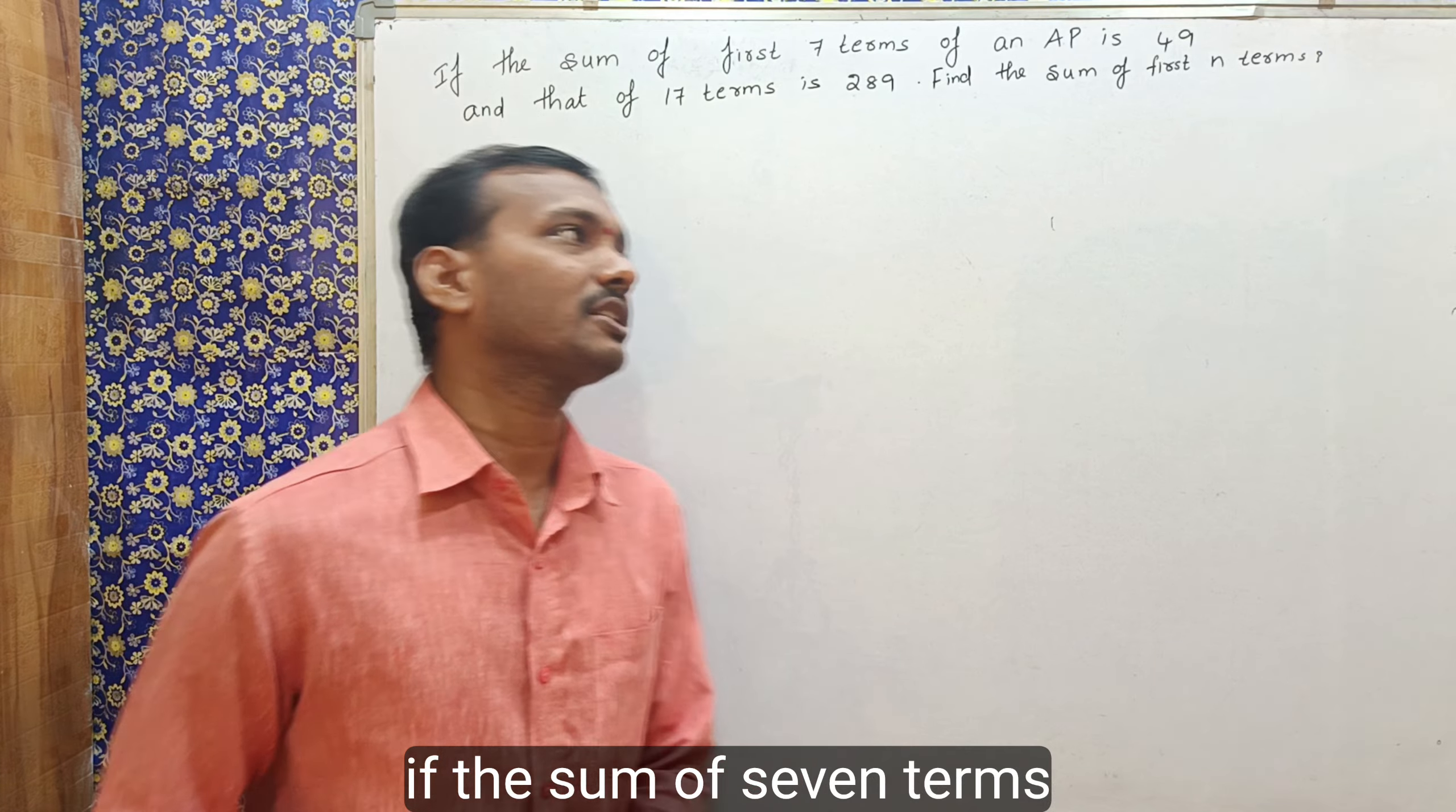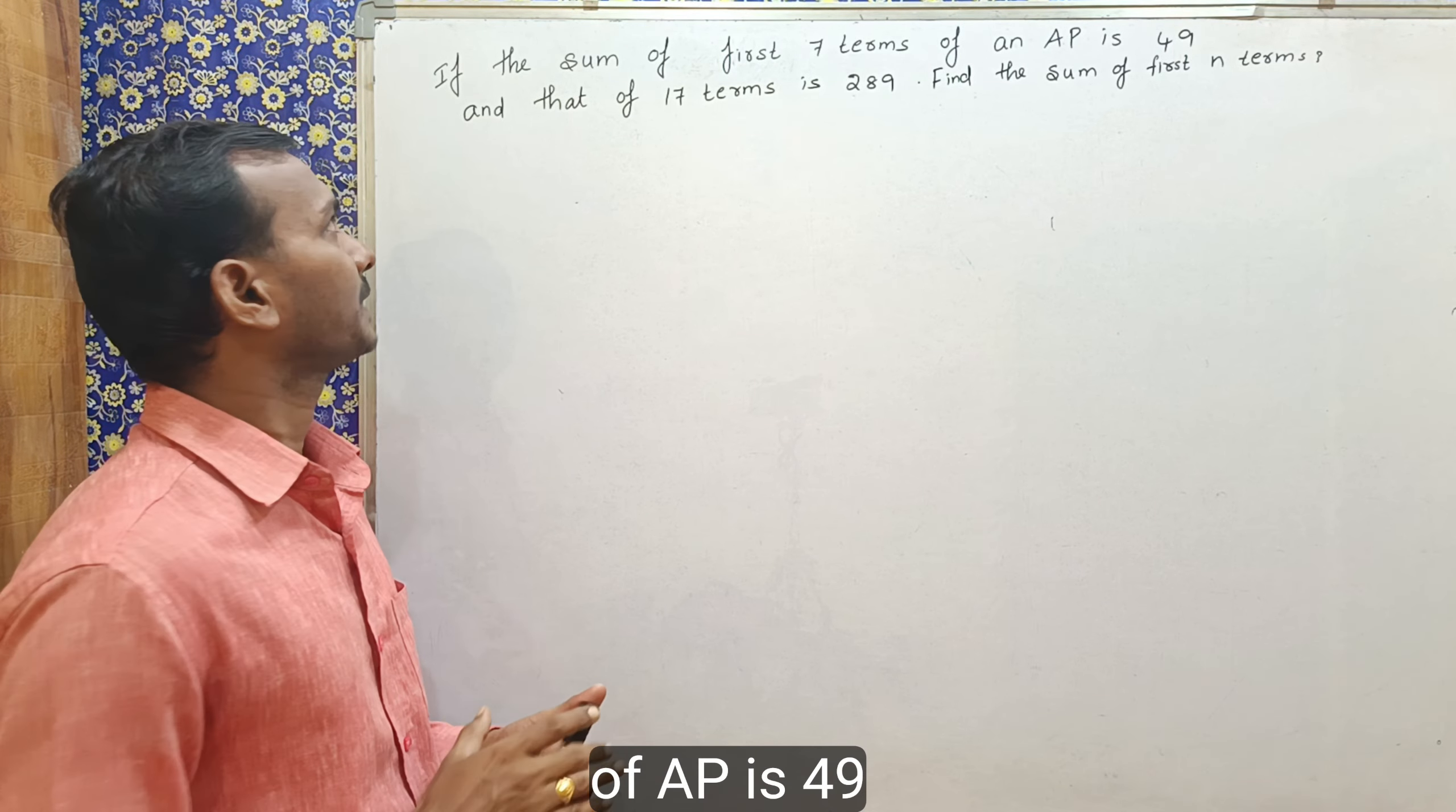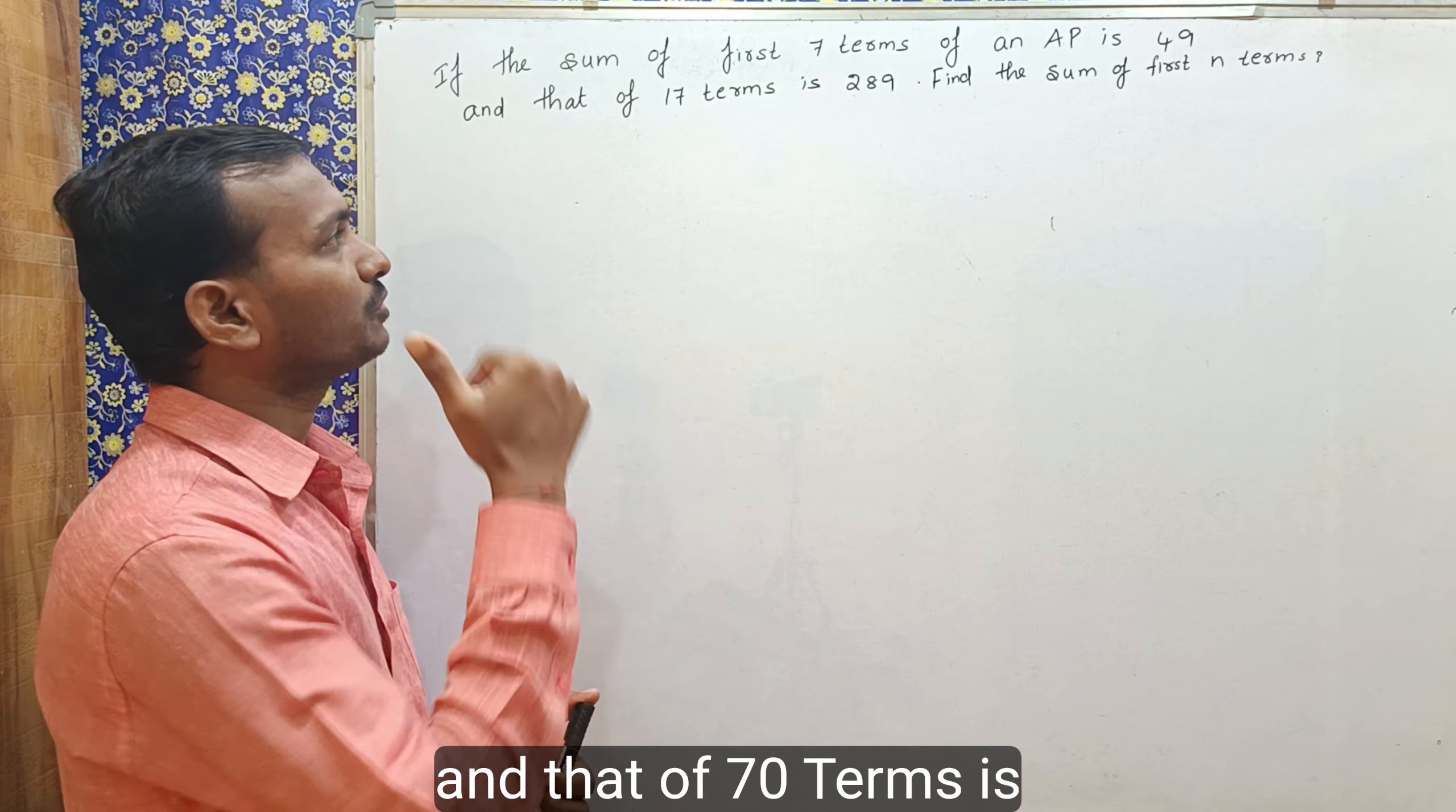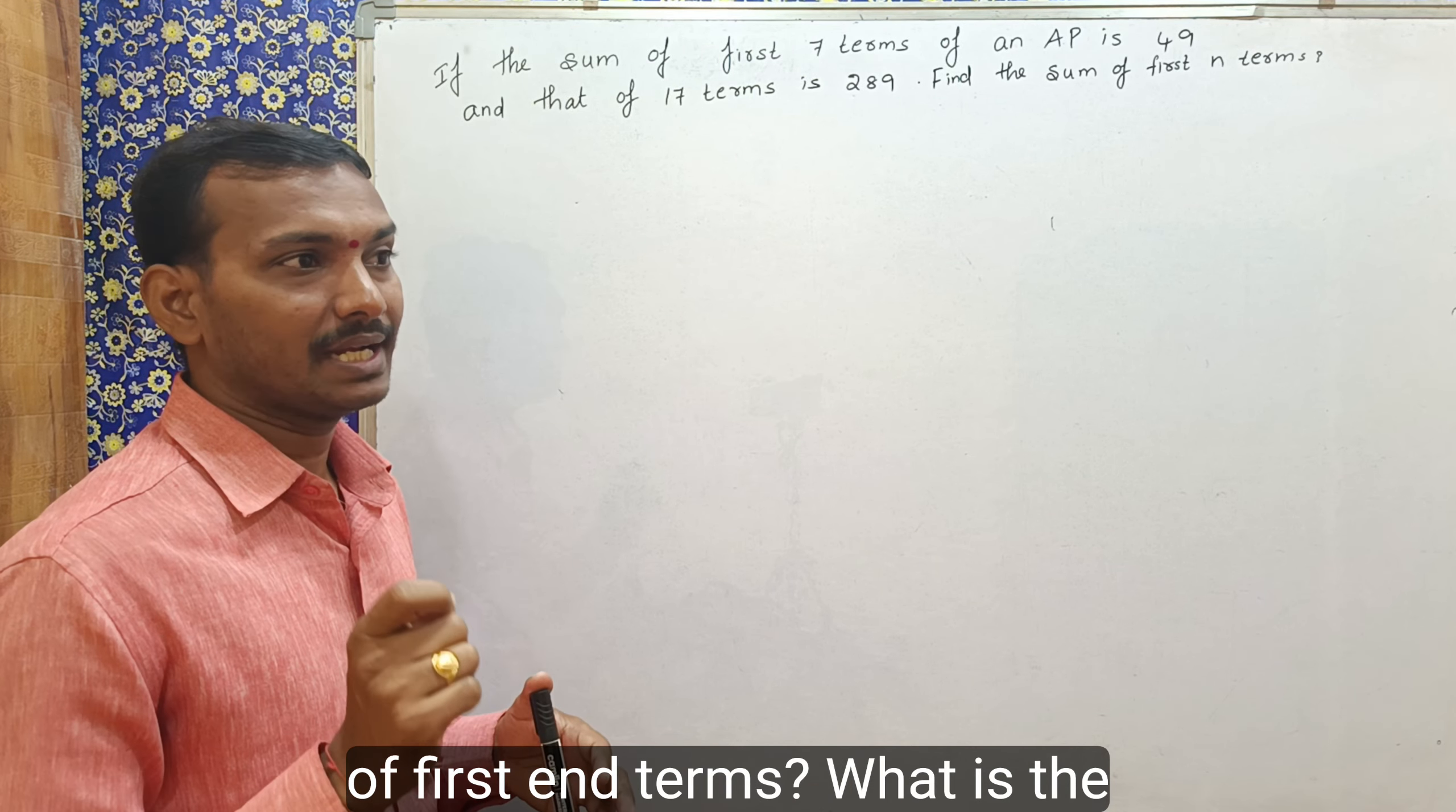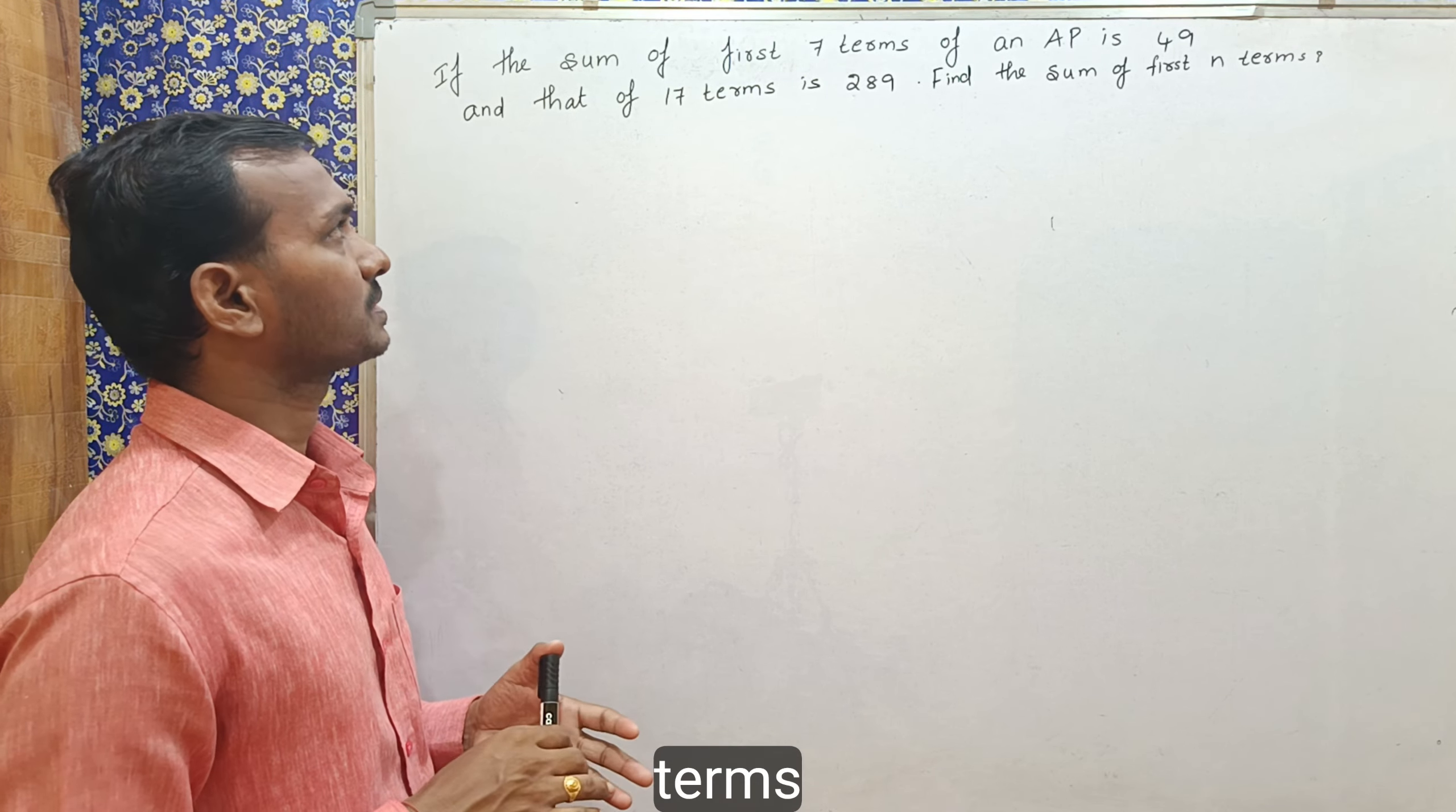If the sum of 7 terms of AP is 49 and that of 17 terms is 289, what is the sum of first n terms?